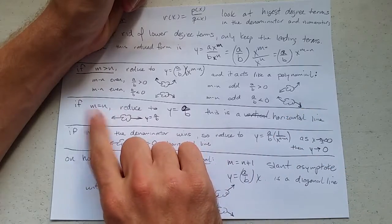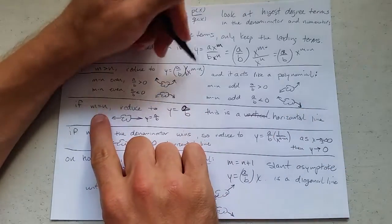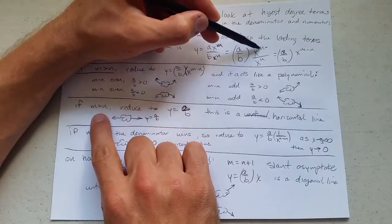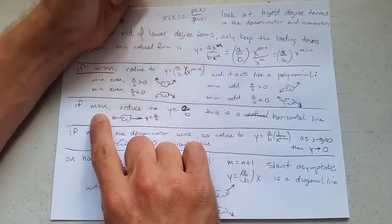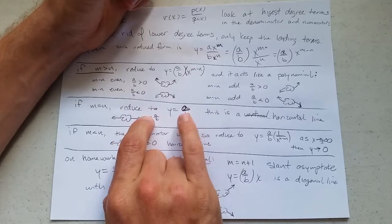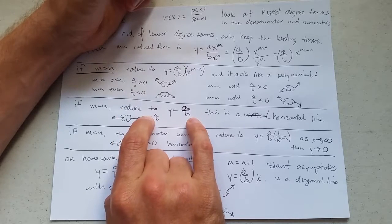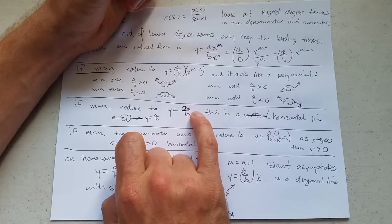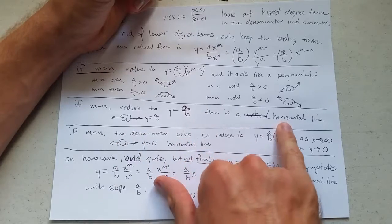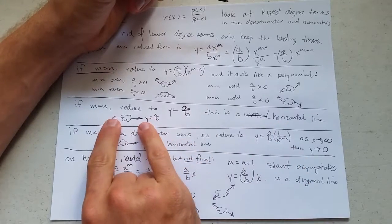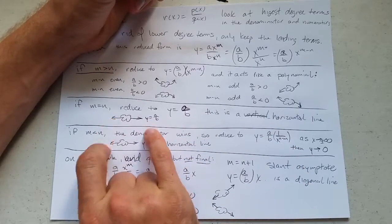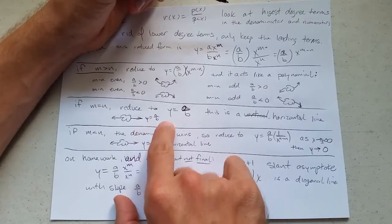What happens if they tie? m equals n? Well, then m minus n will be zero, or if you think algebraically, they will cancel out right here. You're going to reduce to y equals a divided by b. There's no x anymore. What type of line is this? This is a horizontal line. This is how you draw the end behavior. It's flat. y equals whatever number a over b is.